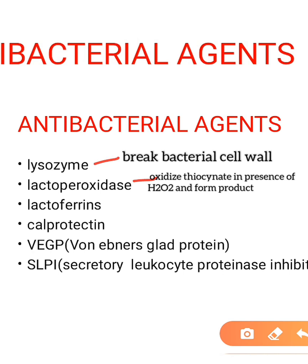Lacto-peroxidase forms a product that kills bacteria. Saliva also has lactoferrin and cal protein, which have antimicrobial properties. It also contains von Ebner gland protein, known as VEGP, which enhances the antimicrobial activities of lysozyme, and SLPI — secretory leukocyte proteinase inhibitor — which has antibacterial, antiviral, and antifungal effects.